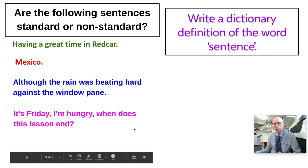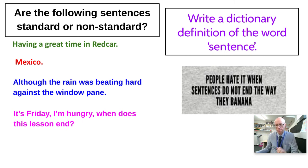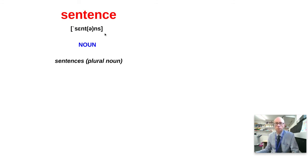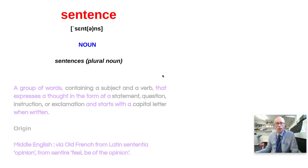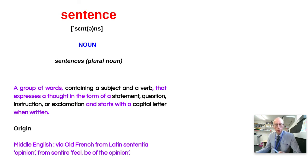So it begs the question: what exactly is a sentence? Write a dictionary definition of the word 'sentence' — pause the video there. Here's 'sentence' as it would be written in the IPA, the International Phonetic Alphabet. Notice it's got that upside-down 'e' — that's the schwa sound. It's a noun in terms of its word class; the plural form just puts an 's' inflection on the end. Here's a definition: a group of words containing a subject and a verb that expresses a thought in the form of a statement, question, instruction or exclamation, and starts with a capital letter when written.